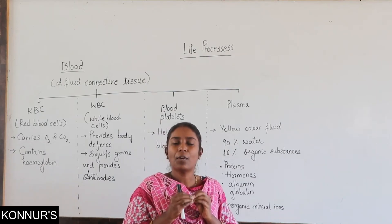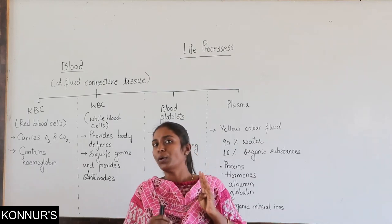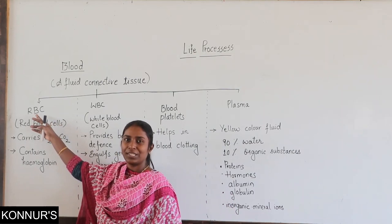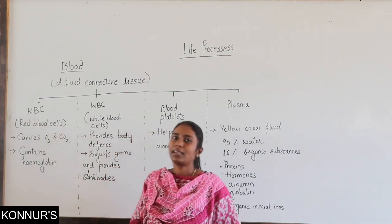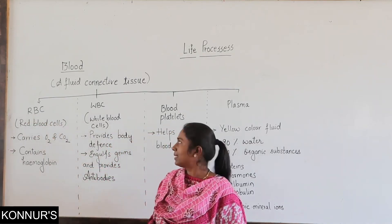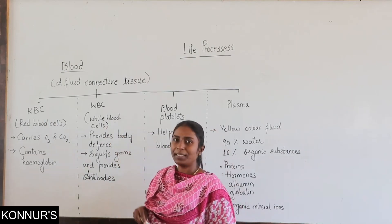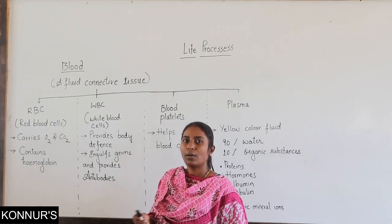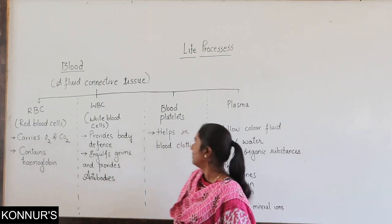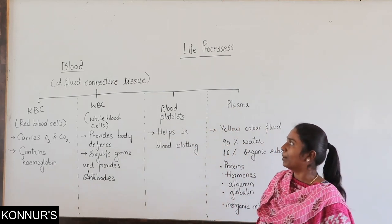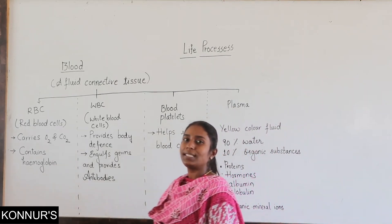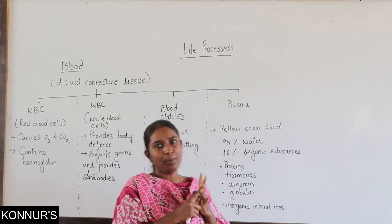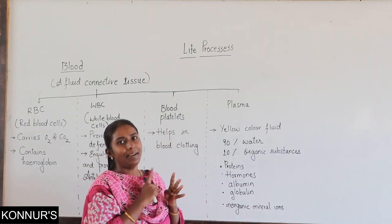No, blood is made up of four main components. That is RBC — red blood cells, also called red blood corpuscles. The next one is WBC — white blood cells, also called white blood corpuscles. Then we have blood platelets and plasma. So there are four components of blood: RBC, WBC, blood platelets, and plasma.